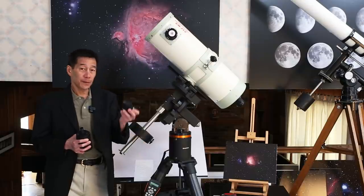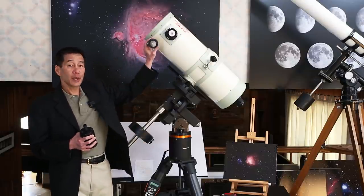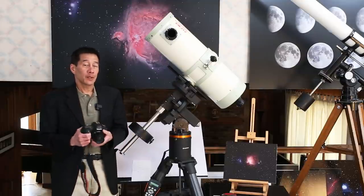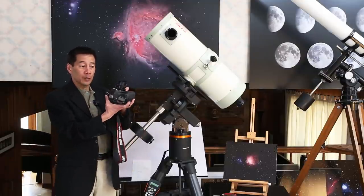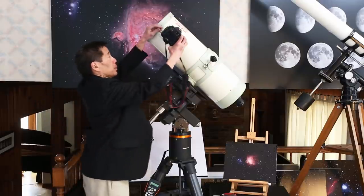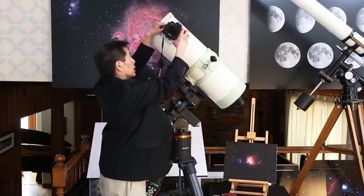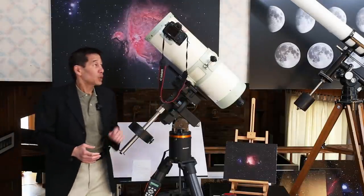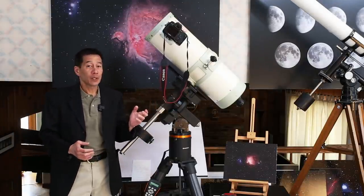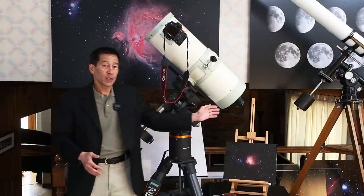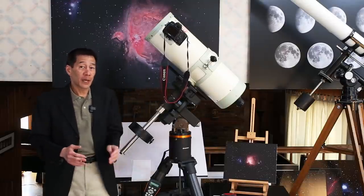Also, they make a field flattener that goes in here for Newtonian mode to take images. If you're curious how you do this, I put the field flattener. This is one of my Canon 6Ds and you open up the focuser like this and it goes on just like that and away you go.